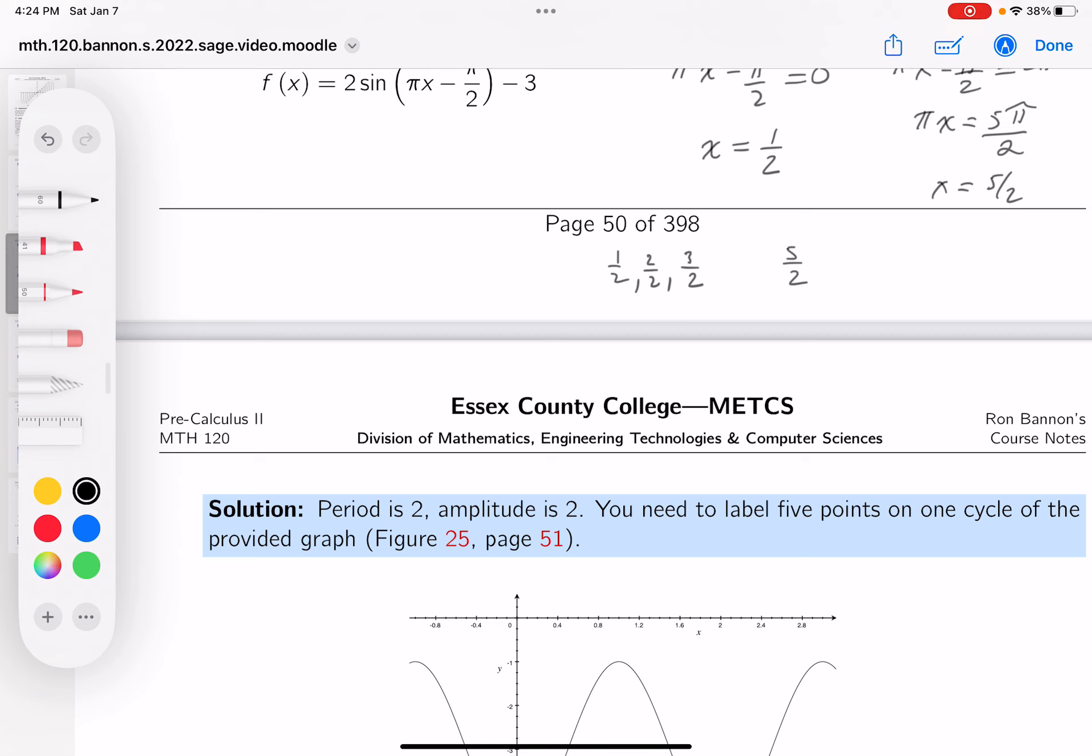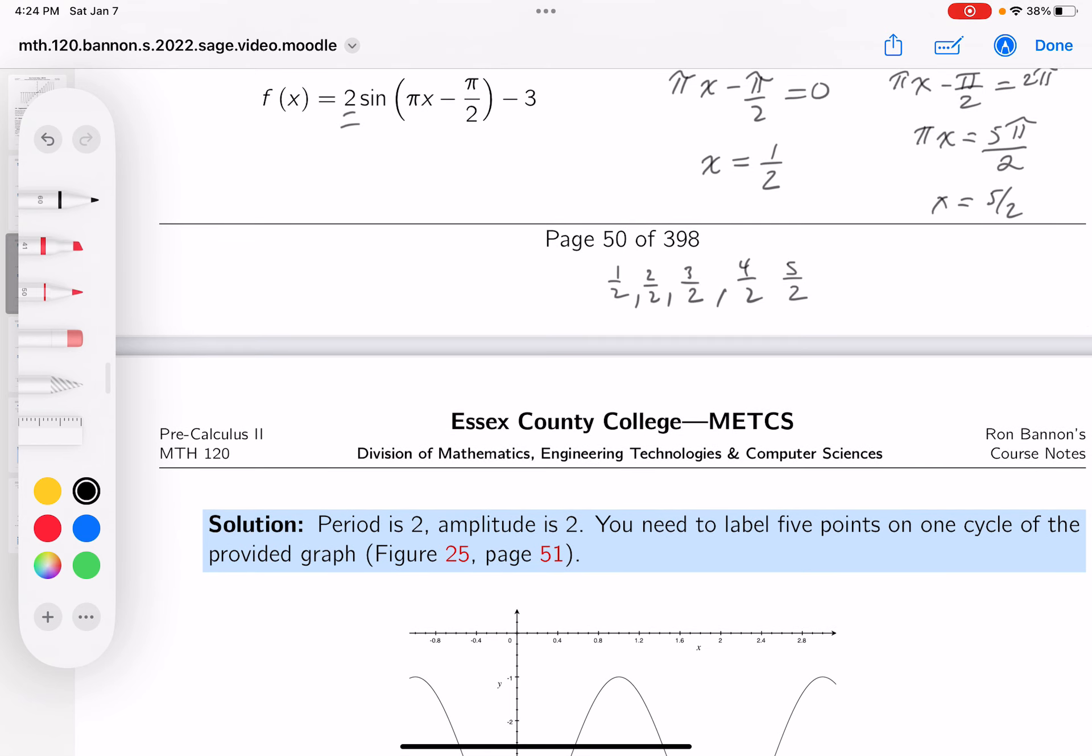Looks like an easy counting problem. 1 half, 2 halves, 3 halves, 4 halves, and 5 halves. All right, what's the amplitude of this? 2. And there's a shifting of it down by 3.